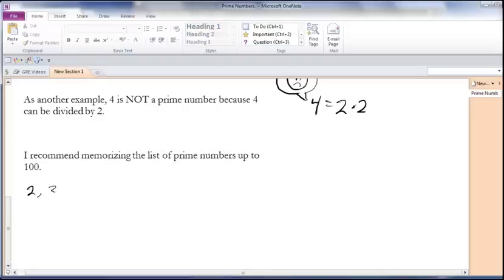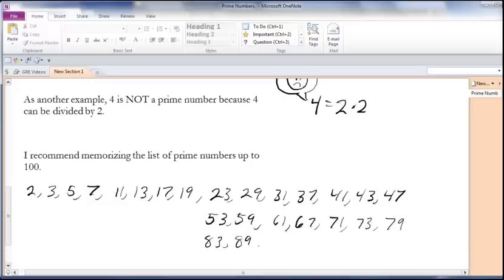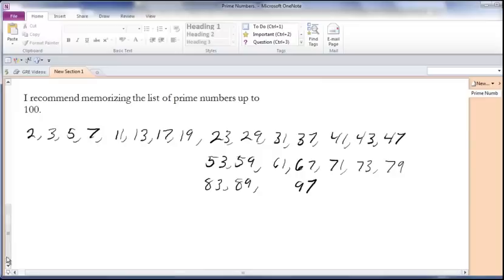2, 3, 5, 7, 11, 13, 17, 19, 23, 29, 31, 37, 41, 43, 47, 53, 59, 61, 67, 71, 73, 79, 83, 89, and 97.